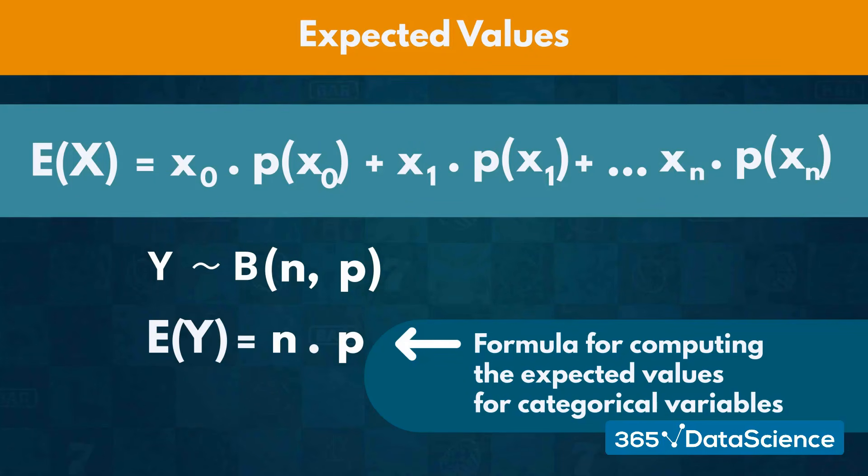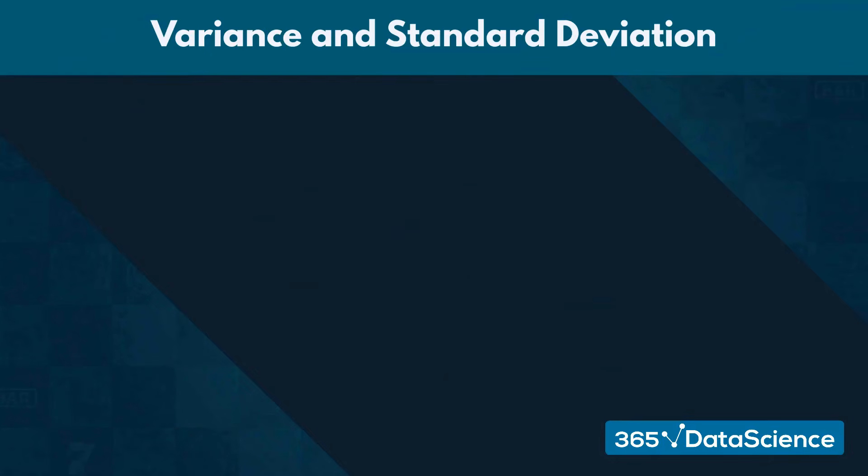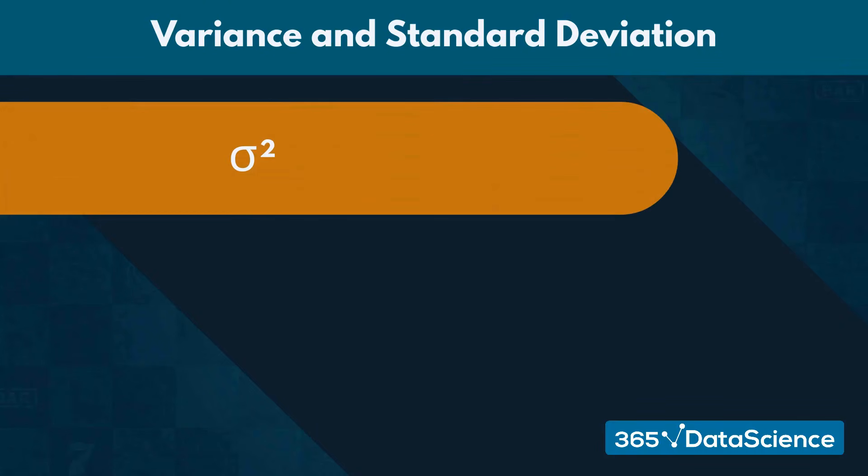After computing the expected value, we can finally calculate the variance. We do so by applying the short formula: variance of Y equals the expected value of Y squared minus the expected value of Y squared. After some simplifications, this results in N times P times 1 minus P.